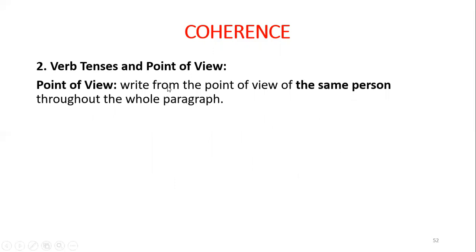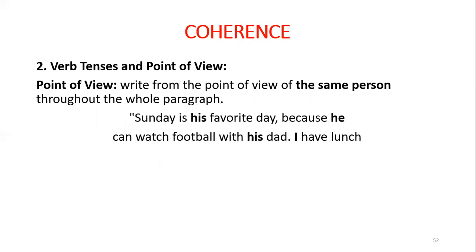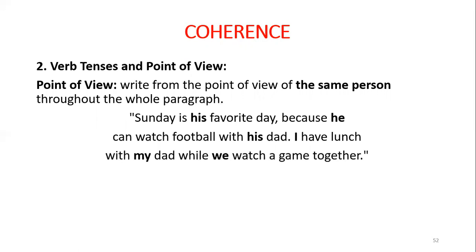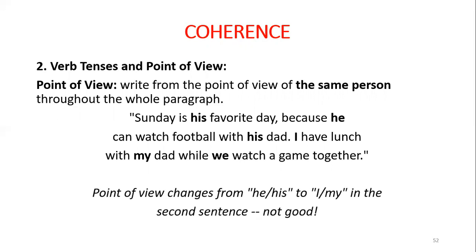Also, point of view should remain the same person through the whole paragraph. If you are talking about 'he,' you should keep talking about 'he' — do not change to 'I' or 'my.' For example: 'Sunday is his favorite day because he can watch football with his dad. I have lunch with my dad while we watch the game together.' When you read this, you notice the writer switches from third person — he, his — to first person — I, my, we. This is not coherent writing.